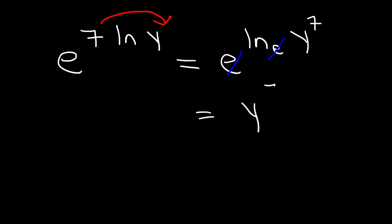Let's try one more example. E raised to the 7 ln Y. What is that equal to? We can't just say it's Y because of the 7. However, what we can do is take the 7 and move it here. So this is equivalent to E ln Y to the 7th. And the base is E, so we can get rid of these two. And the final answer is simply Y to the 7th.